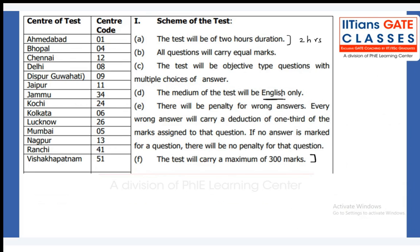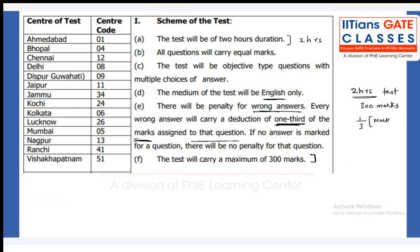The medium of the test will be English only — there will be no other choice like Hindi or any local language. There will be a penalty for wrong answers, so there is negative marking. Every wrong answer will carry one-third of the marks assigned to that question. The test carries a maximum of 300 marks and duration is two hours.